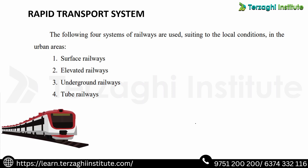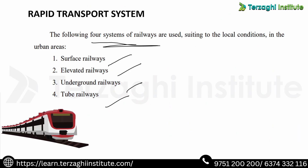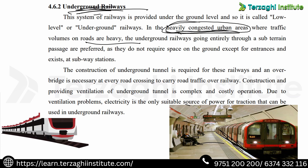Next topic: Rapid Transport System. There are four systems of railways: surface, elevated, underground, and tube. Underground railways are used in heavily congested urban areas where heavy traffic exists. They run in underground tunnels. Every crossing uses a bridge — over bridge is on the road.